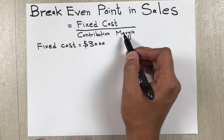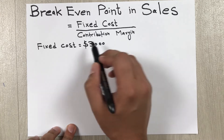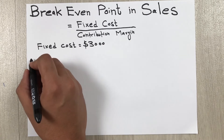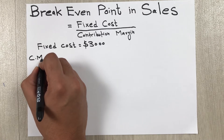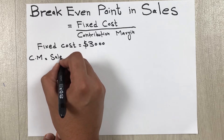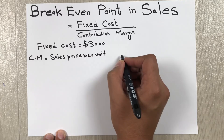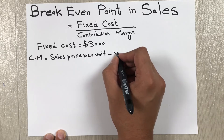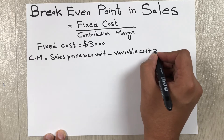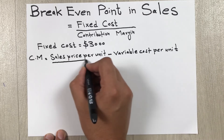Now I will talk about contribution margin. Contribution margin is equal to sales price per unit minus variable cost per unit, divided by sales price per unit. I'll write the formula: CM equals sales price per unit minus variable cost per unit, divided by sales price per unit.